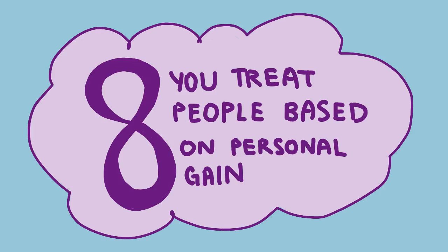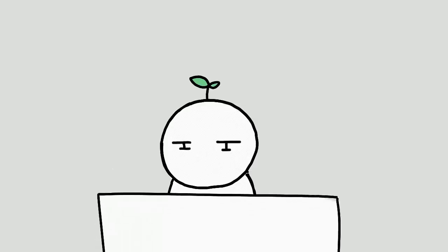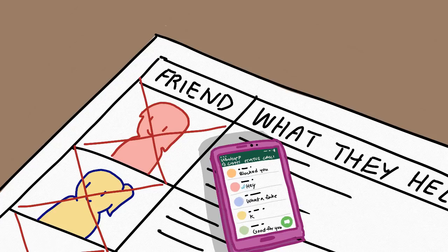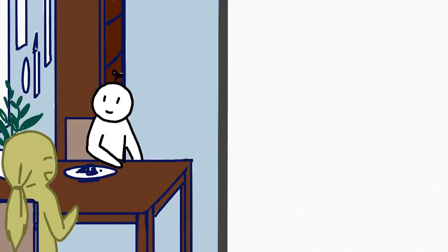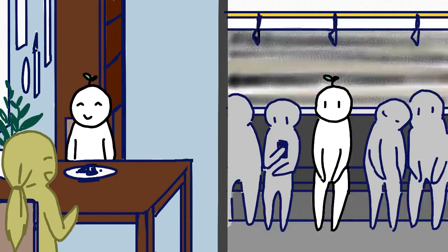And eight: you treat people based on personal gain. Everyone has a right to think about self-benefits, right? However, if that's the only way you view your relationships, not only will you lose respect, but you'll lose friends as well. It's understandable to behave differently depending on who we're with, as we're closer and more distant in certain social circles.